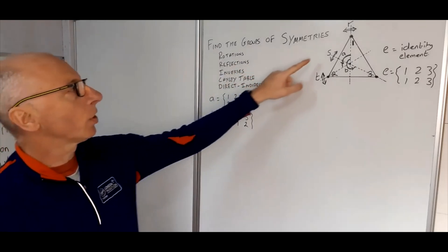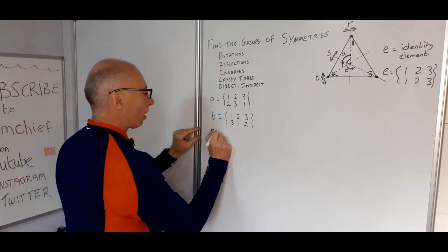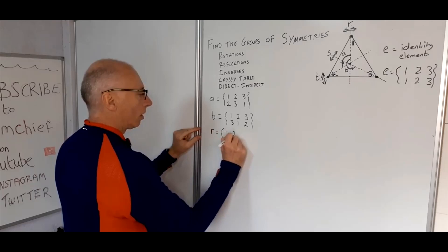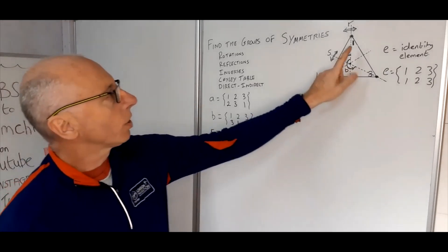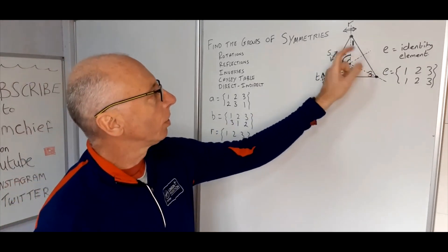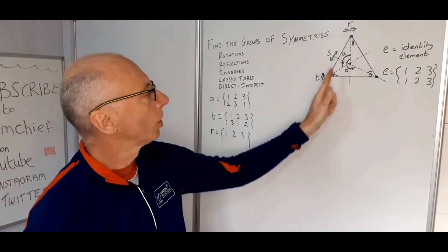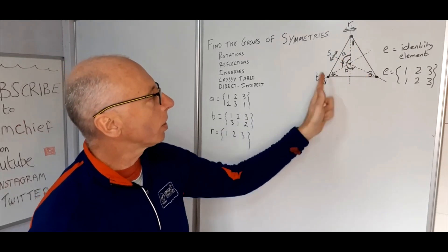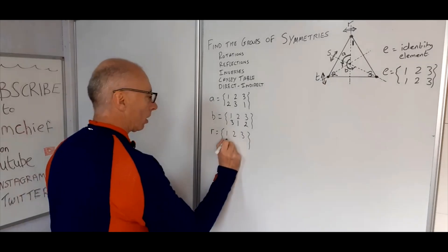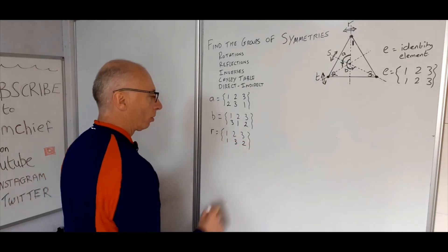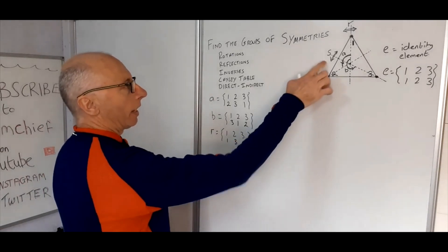Now let's have a look at the reflections. The first one we've got is R, with starting points one, two and three. Reflection through this line: one won't change, and then two and three will swap places. So that gives us our two-line permutation for R.